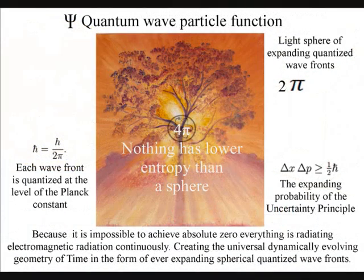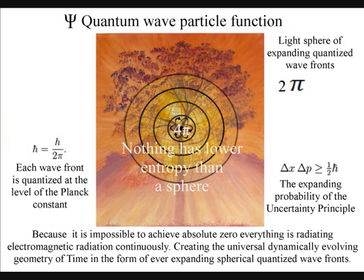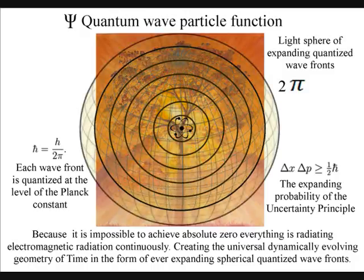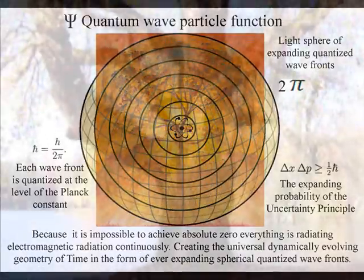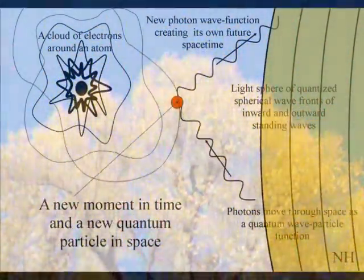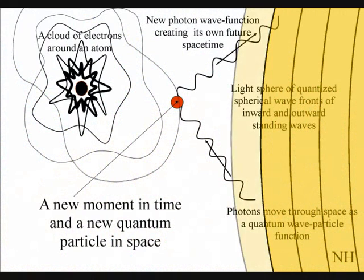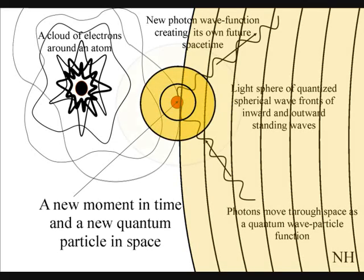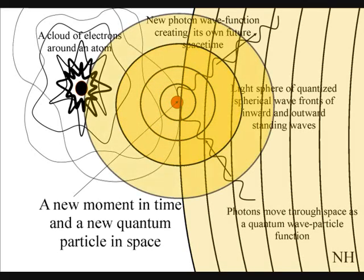The second law of thermodynamics falls out of this theory. The organization for the spontaneous disorganization of entropy is formed by the spherical symmetry of the quantum wave particle function. The spontaneous absorption and emission of light forms the flow of time with photon energy cascading down, forming greater degrees of freedom for the flow of entropy.